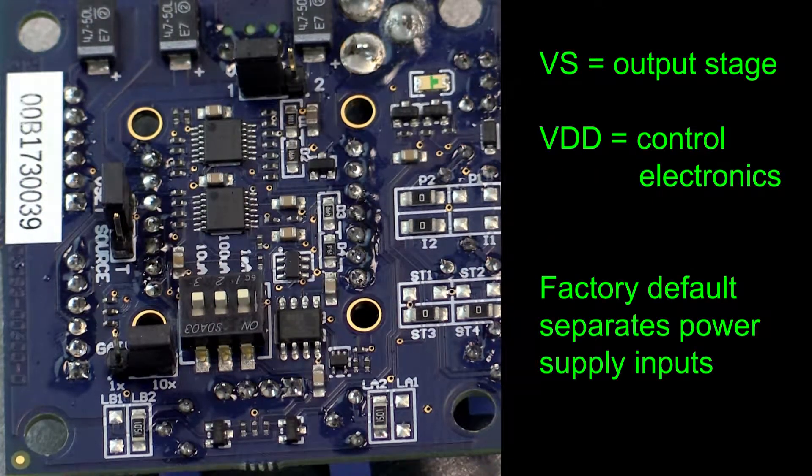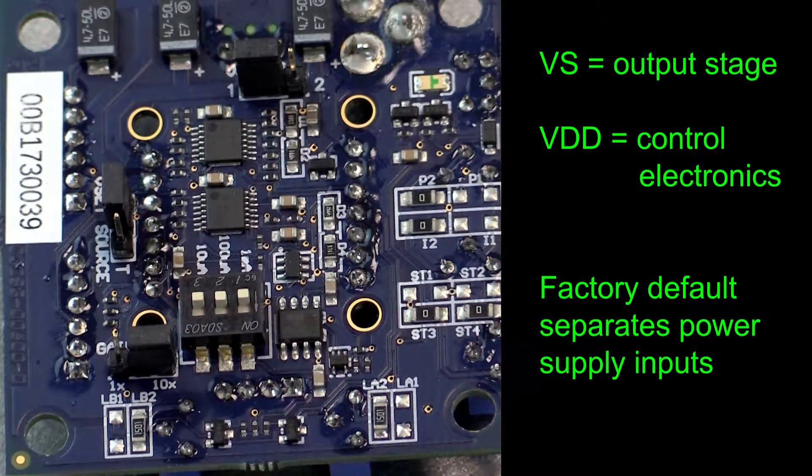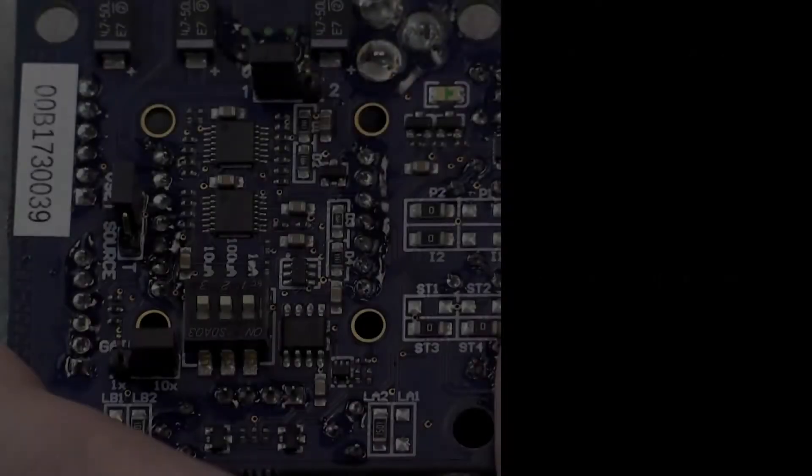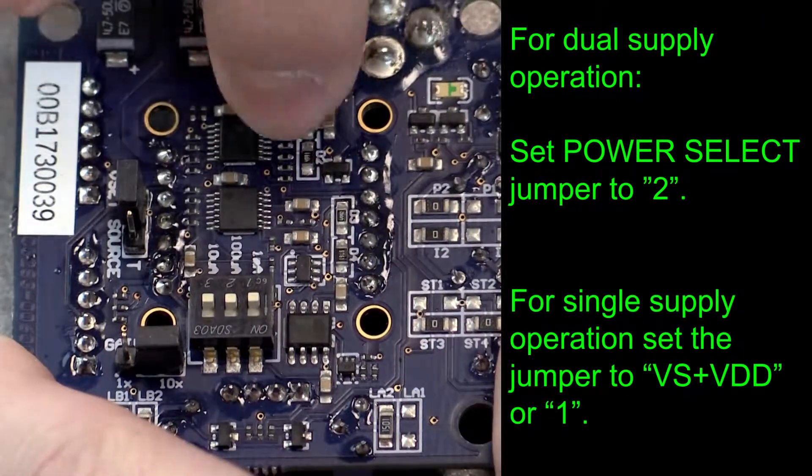VS drives the output stage while VDD powers the control electronics. The factory default is to separate the two power supply inputs. For this, we need to move the power select jumper to the 2 position.